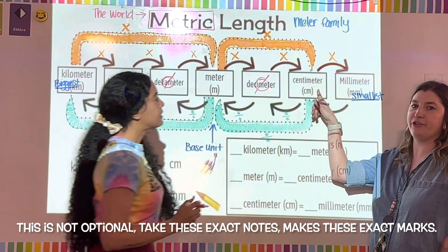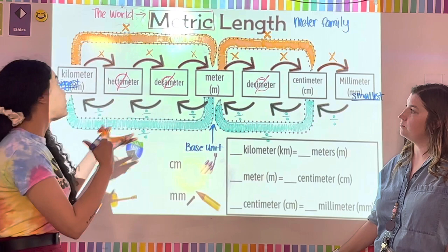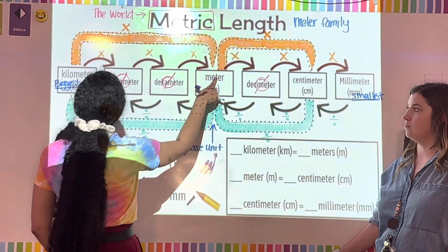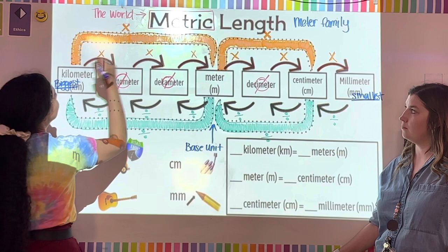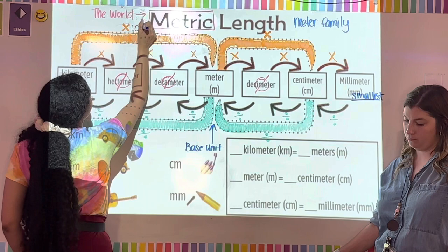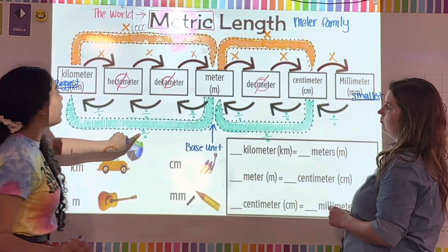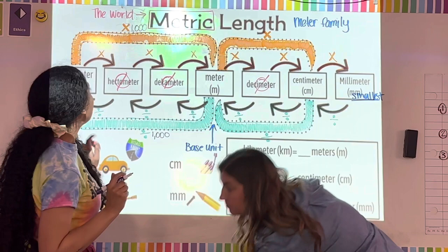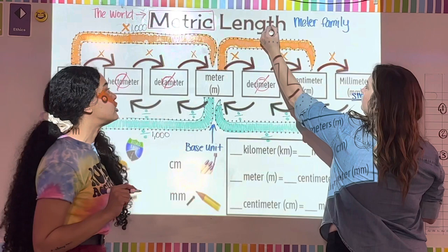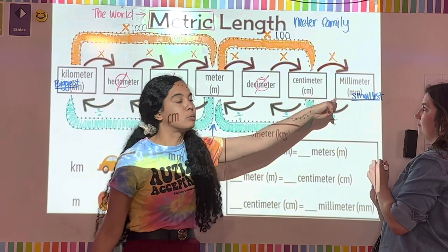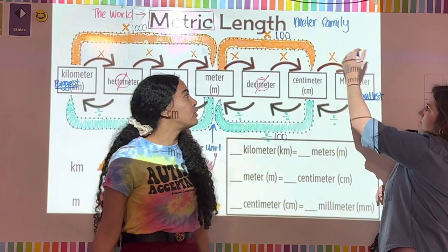Only the ones with units underneath are the ones you're going to use — the others are just for your knowledge. When going from kilometers to meters, you multiply by 1,000. Going from meters to kilometers, you divide by 1,000. Going from meters to centimeters, you multiply by 100. Going from centimeters to meters, you divide by 100. Going from centimeters to millimeters, you multiply by 10.